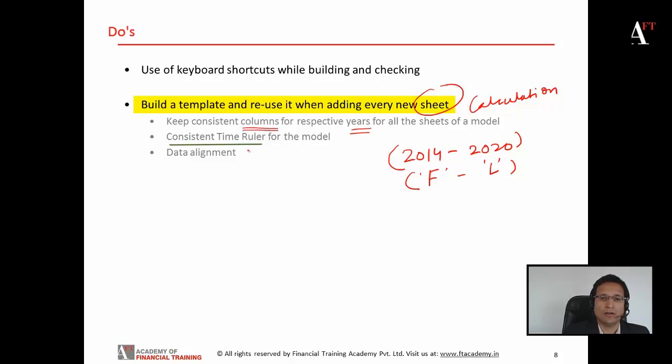Consistent time ruler for the model. You should have one single time ruler, either quarterly or annual, throughout the model. Sometimes you need to project the numbers on a quarterly basis and then convert them into annual. In such a case you can have two time rulers in the model, however the annual results are drawn only at the output level.